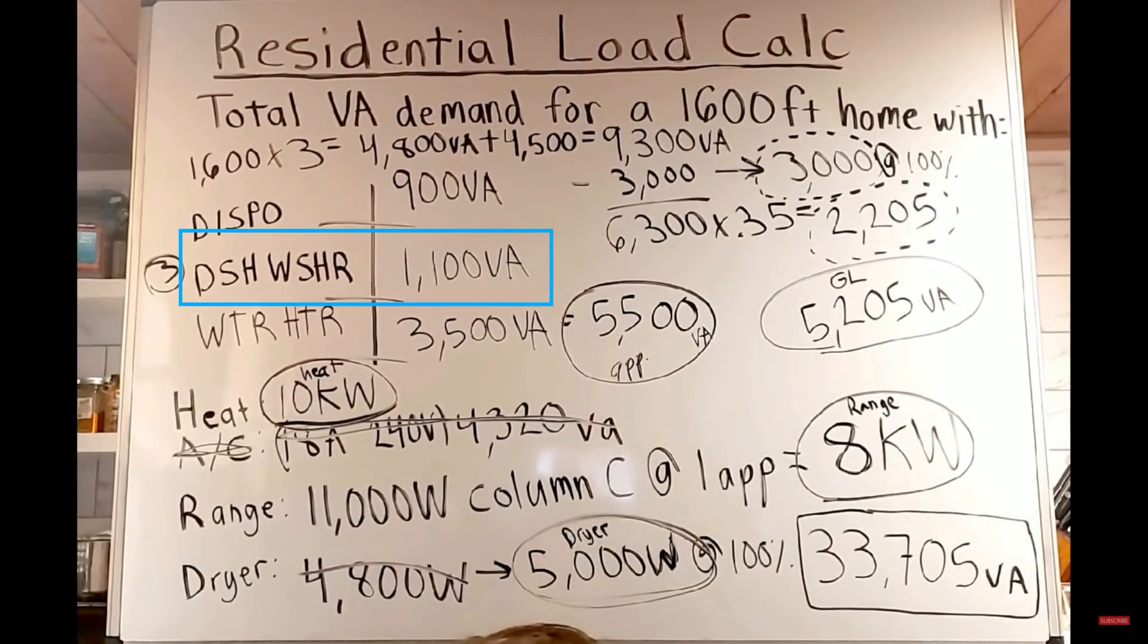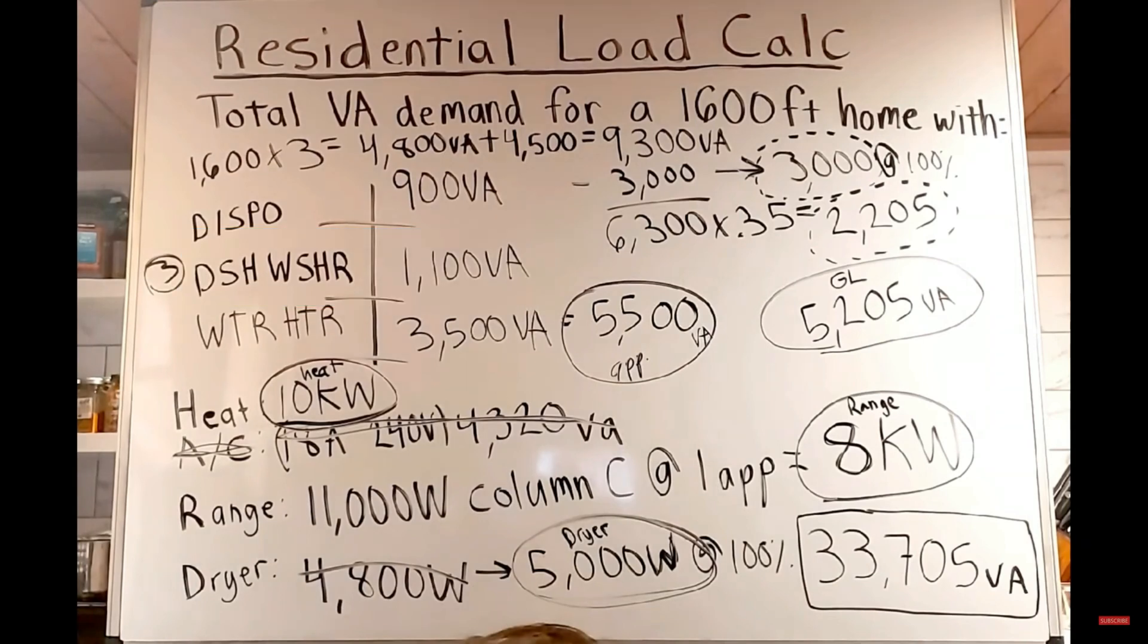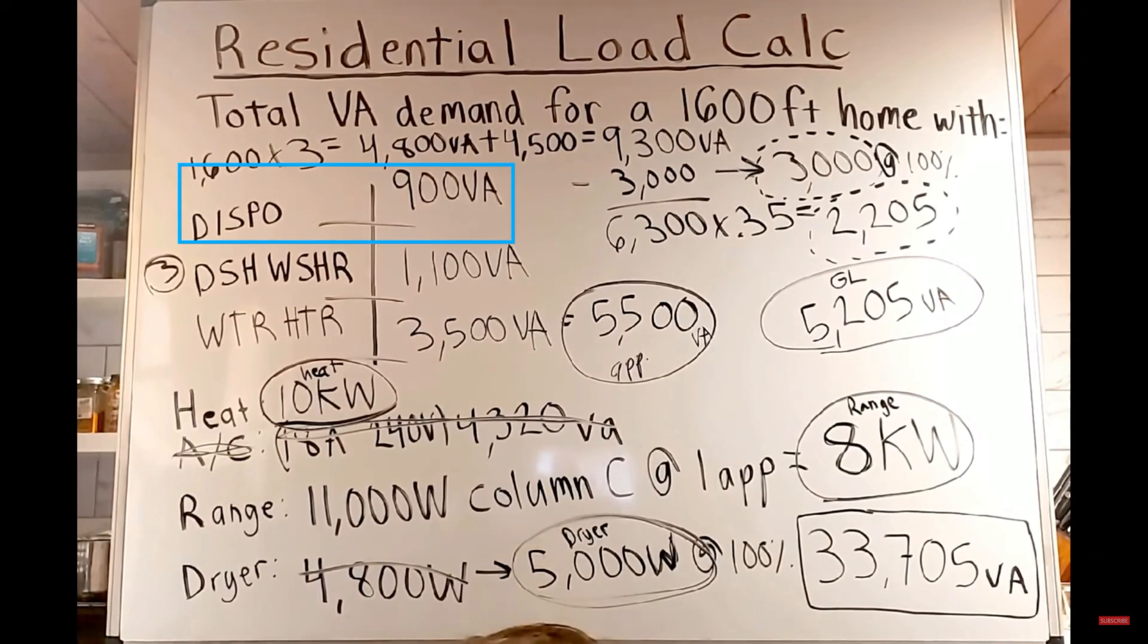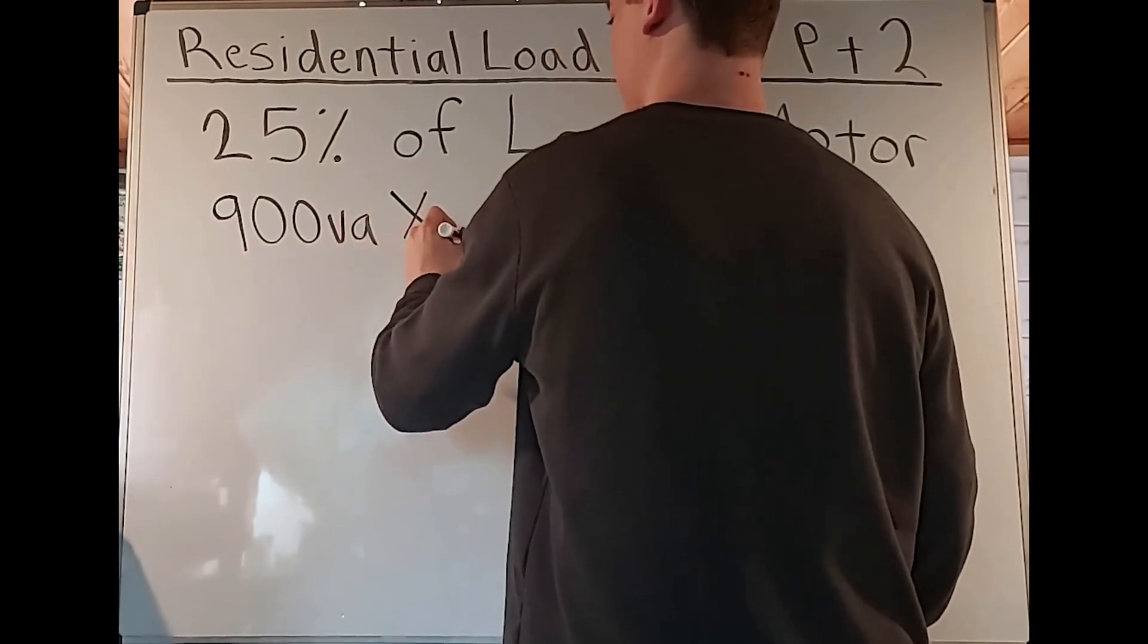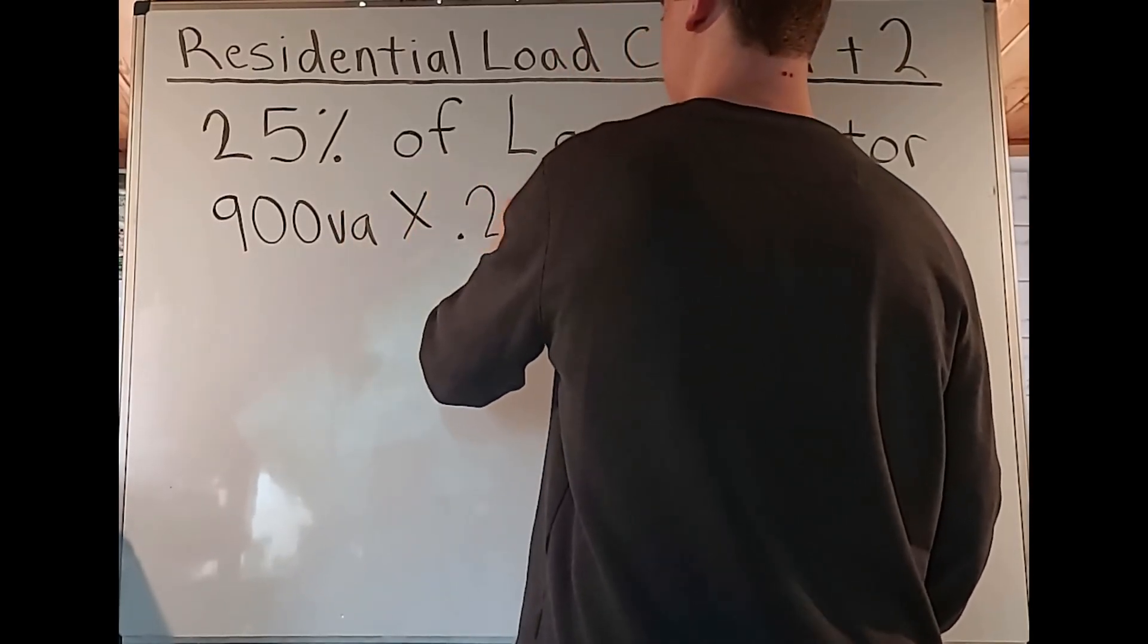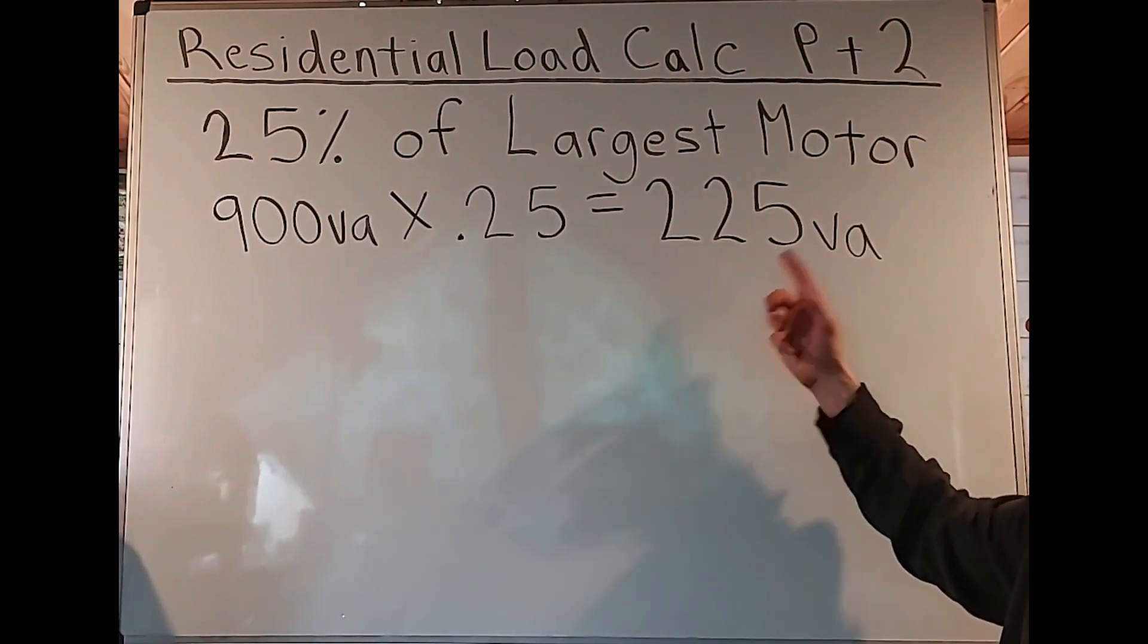Just think, what appliance actually uses a motor for its main function? That's mostly what this is going to be. Or logically, just think what has the largest motor in it. As we see, the dishwasher is 1100 volt amps. So that's why I'm mentioning this. Since that would contain just little motors, we're not going to be thinking of that as the largest motor.